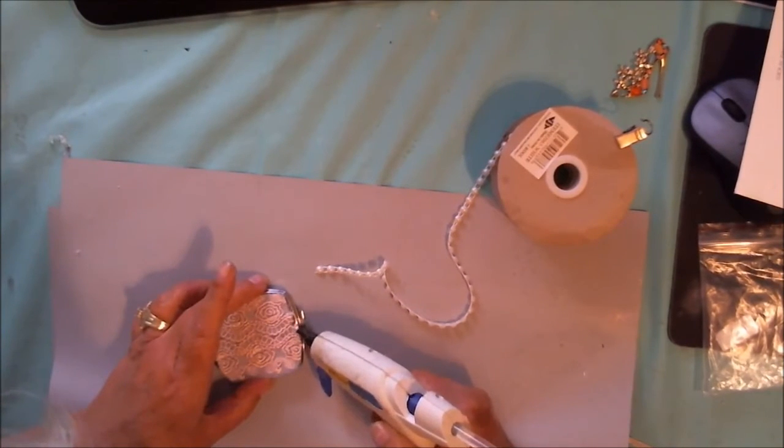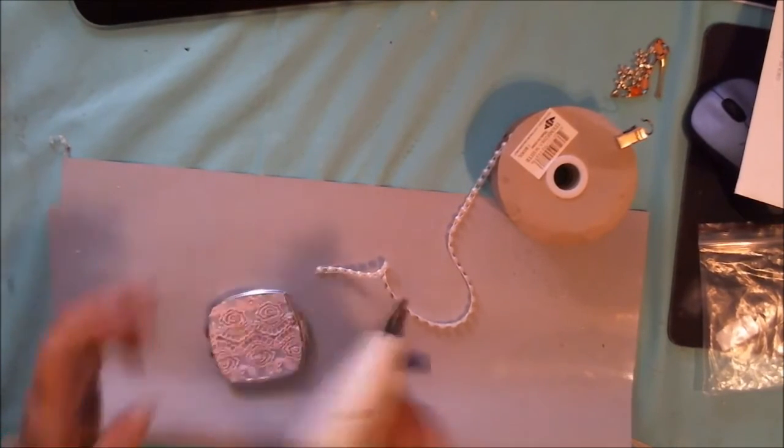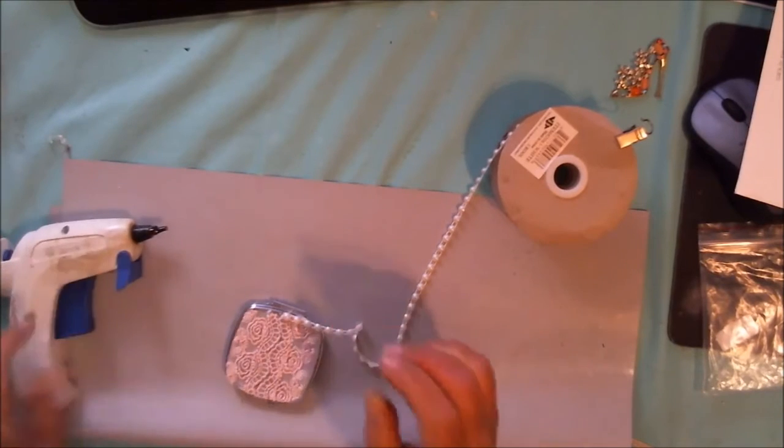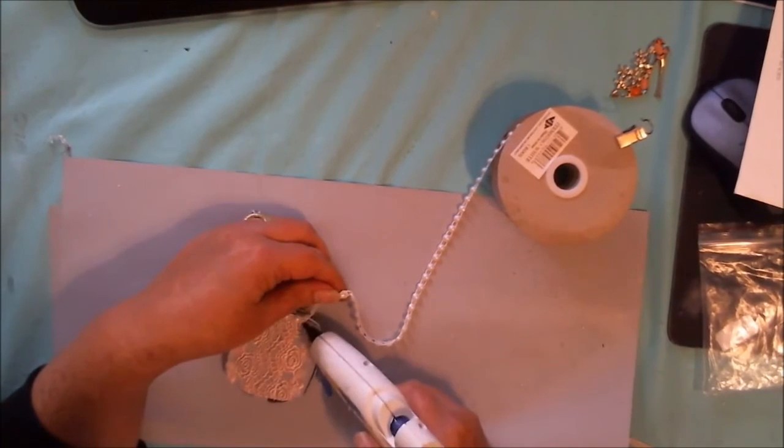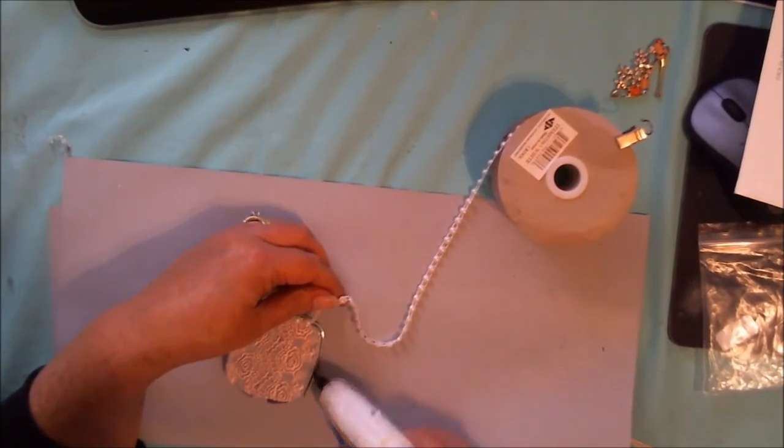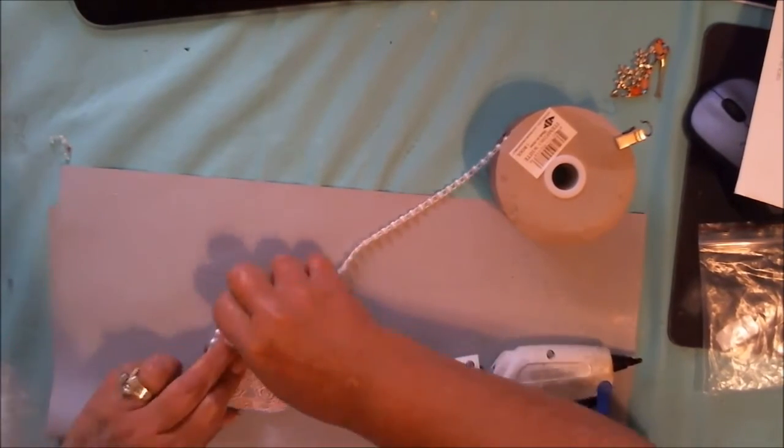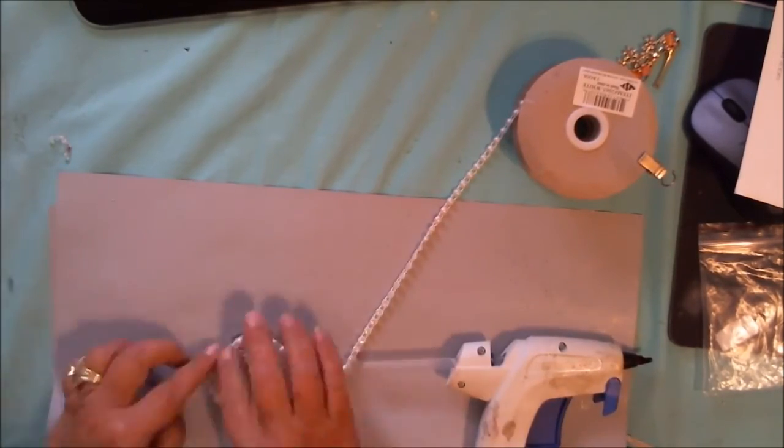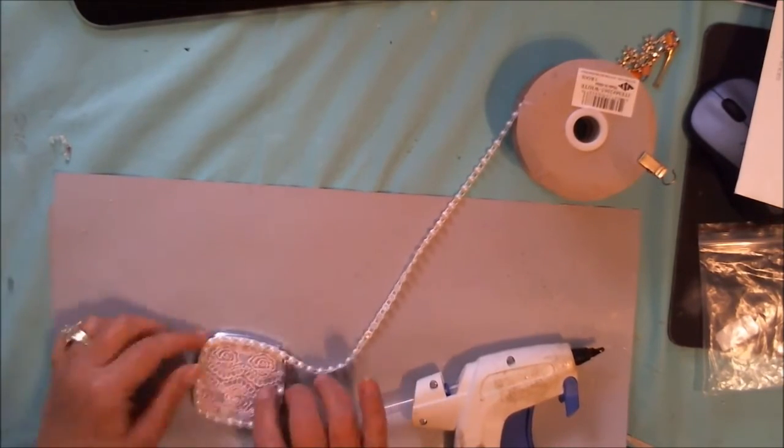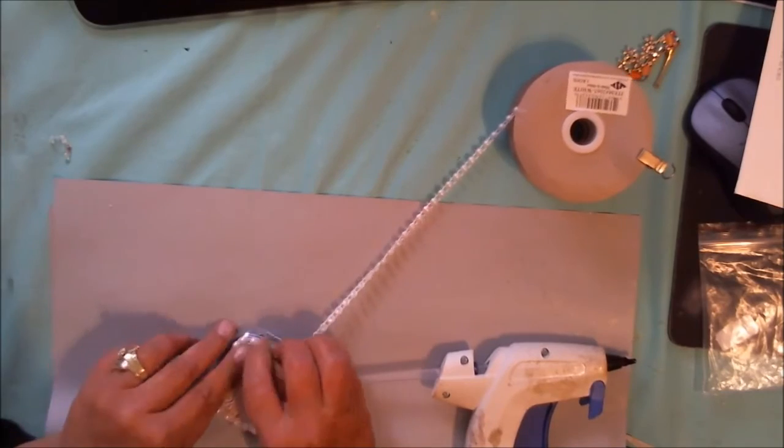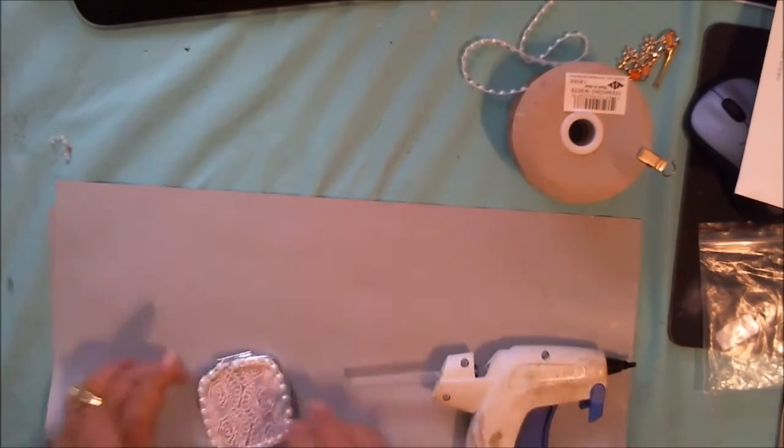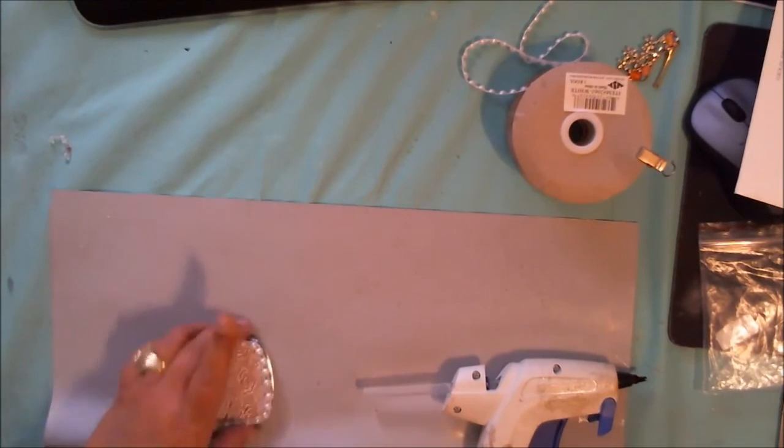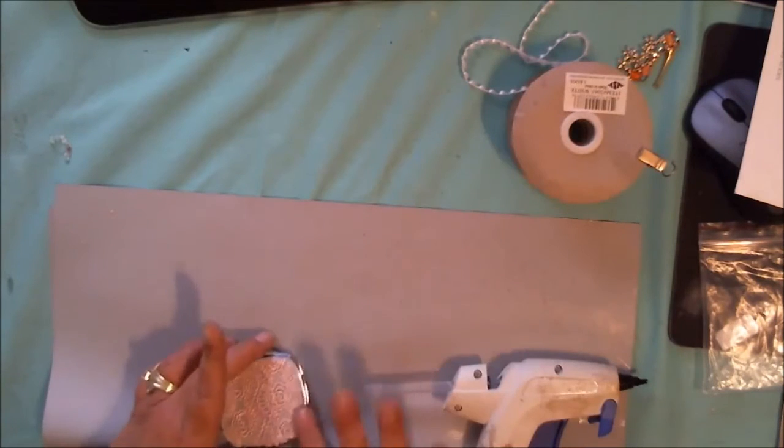I'm going to start here in the back, put a little, little tiny bit of glue, and start my flatback pearls. I'm just going to go around the edge. So I've got my pearls around the edge, and I'm going to do the same thing to the other side, but I'm going to do that later when we're off camera.